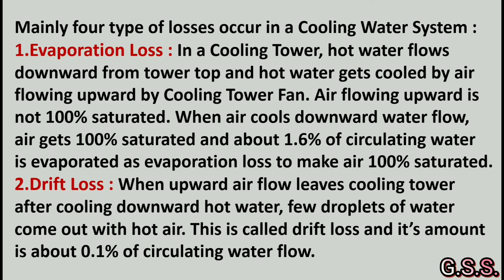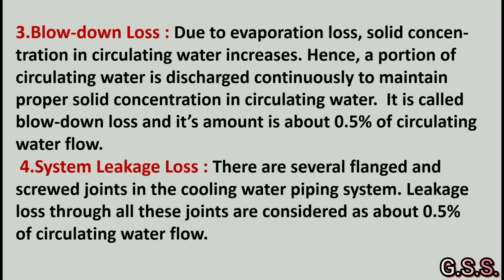Drift loss amounts to about 0.1 percent of circulating water flow. The third one is blow down loss. Due to evaporation loss, solid concentration in circulating water increases, so a portion of circulating water is discharged continuously to maintain proper solid concentration. This is called blow down loss and its amount is about 0.5 percent of circulating water flow.